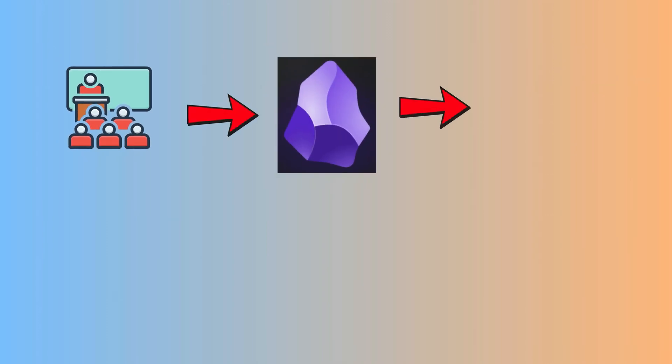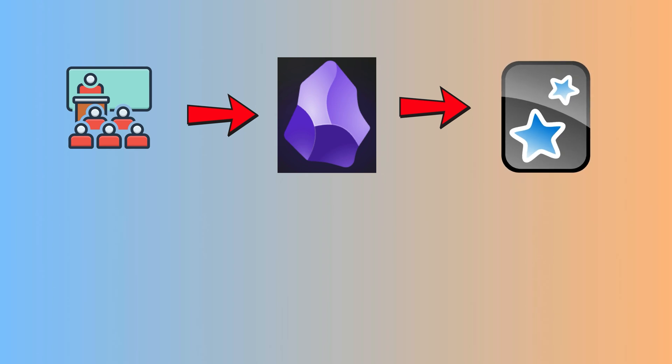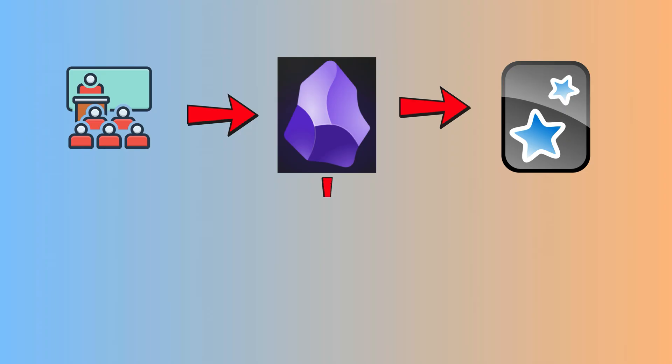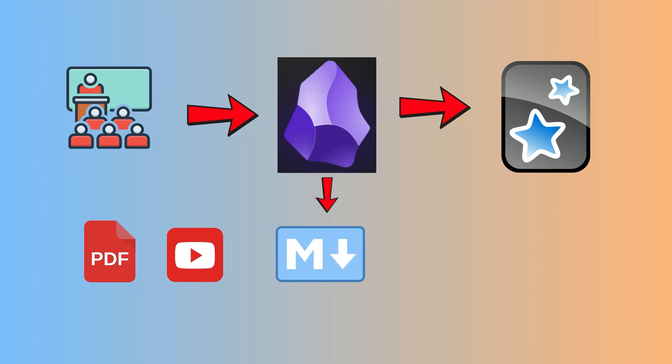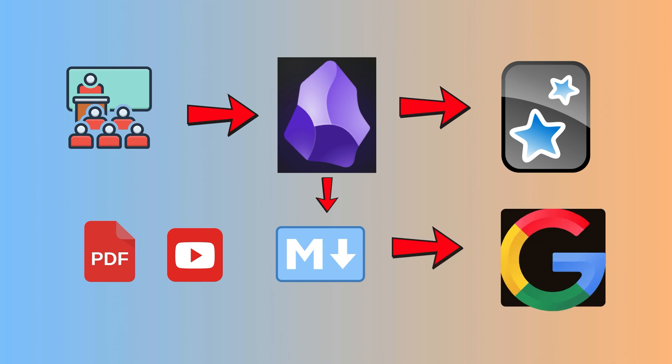Right now, my process is pretty straightforward. I take notes from lectures, books and handouts, then organize everything in Obsidian. Then I create questions and answers to upload into Anki. It's a system that works, but I'm always looking for ways to make it smoother and more efficient. That's where Google's Notebook LM comes in. I've been playing around with the idea of integrating it into my workflow, and here's my progress so far.